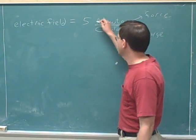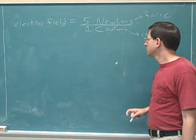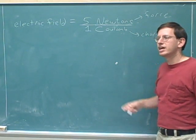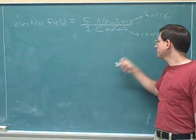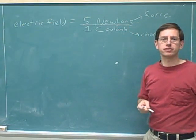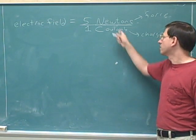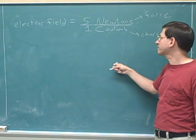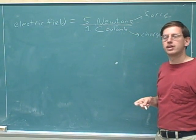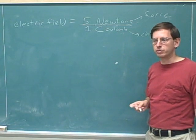Let's combine this into a single ratio. If the electric field here is five newtons per coulomb, what that means is: if I placed a one coulomb charge at this point on the blackboard, it would feel a force of five newtons — an electric force of five newtons. That's what it means when I say the electric field at this point is five newtons per coulomb.